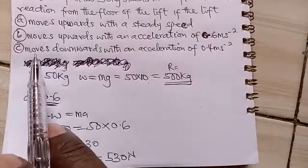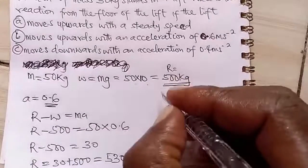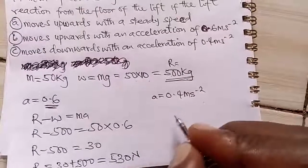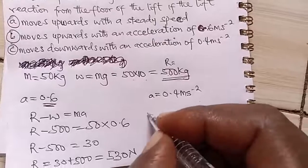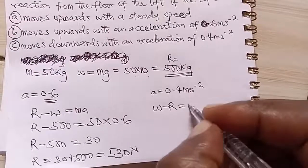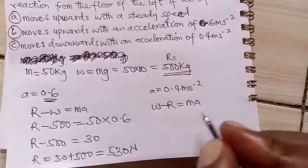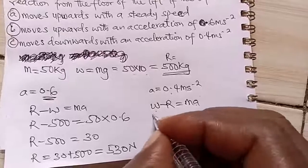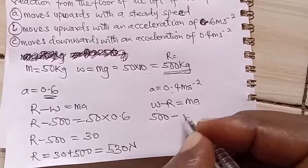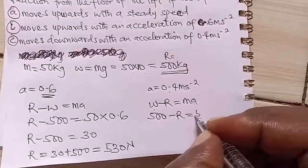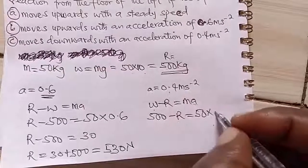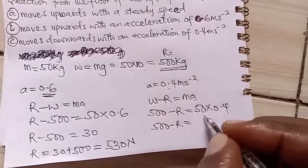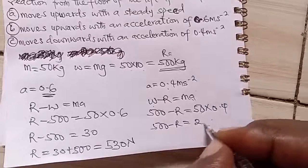The C says if it moves downward with an acceleration of 0.4. So here now we're working with acceleration 0.4 meters per second squared. Now it's moving downwards. And for it to move downwards, the weight will be greater than the reaction. So now we're working with a as this. So the weight, remember, it continues to be 500 minus R. We're looking for R. Mass is still 50 times the acceleration now, 0.4. So 500 minus R gives us 50 times 0.4 which will be about 20.